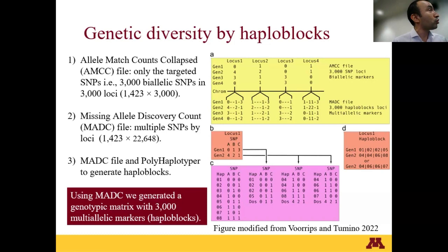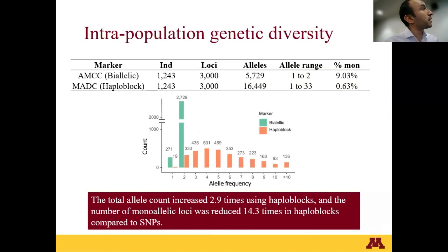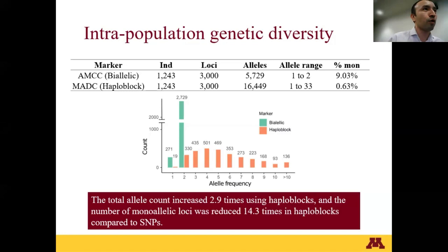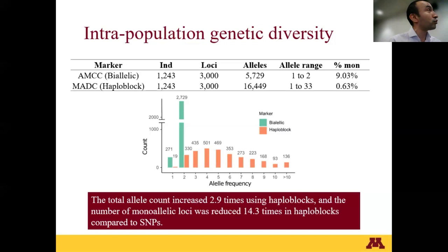Panel B shows how we can use multiple SNPs — SNP A, B, C at locus one — to convert into one single multiallelic marker. We then compared the difference between biallelic versus multiallelic markers. We have the same number of individuals and the same number of loci, but the number of alleles is completely different because, with biallelic markers, we only have two options — A or B — and several of them are monomorphic. As seen in the bar plot, 271 markers were mono-allelic. But when we convert these markers to multiallelic markers, the percentage of mono-allelic markers reduced to 0.6% versus 9% of monomorphic markers in the biallelic set.